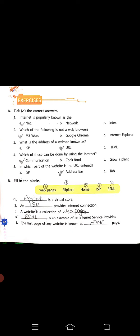Beta, first tick the correct answer. Internet is popularly known as? Beta, internet kis naam se popular hai - the Net. Second, which of the following is not a web browser? In me se web browser konsa nahi hai? MS Word. Beta, MS Word web browser nahi hai, application software hai. Third, what is the address of a website known as? Beta, website ka jo address hota hai, URL hota hai.